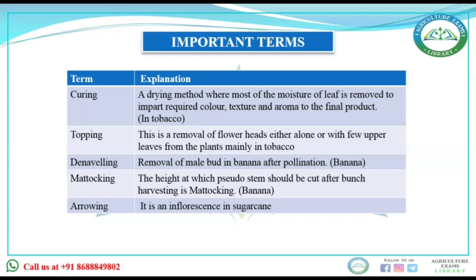Matocking: after the harvest of the bunch in banana, the stem is cut so that there is good mobilization of nutrients. The mother plant's pseudostem is cut, leaving a stump of about 0.6 meter height. This method is generally practiced in banana cultivation.